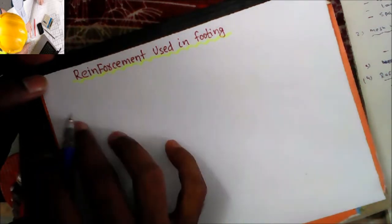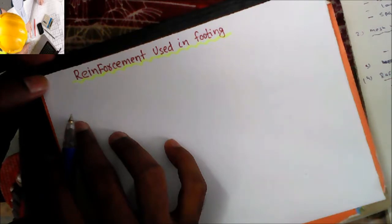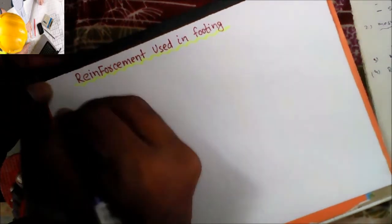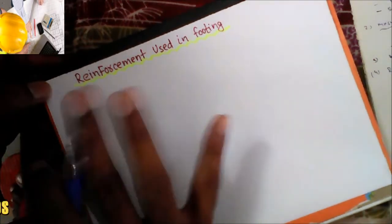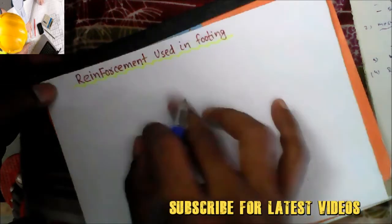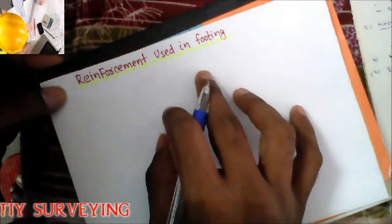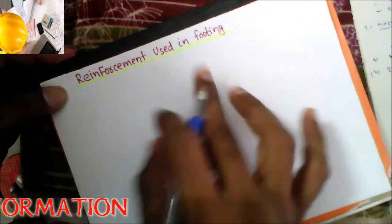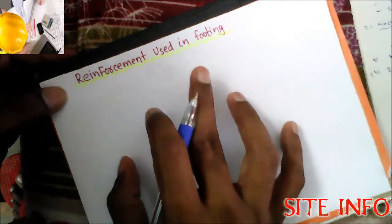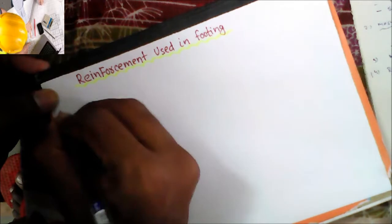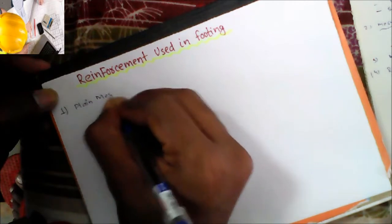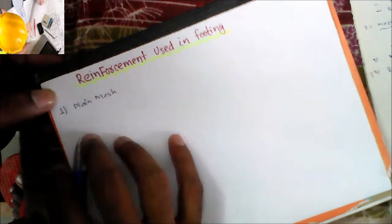In this video I am going to explain what reinforcement we use in the footing. The first reinforcement generally provided in the footing is what we call a mesh. In footing, we provide reinforcement in the x direction and y direction, and that reinforcement is generally called a plain mesh.